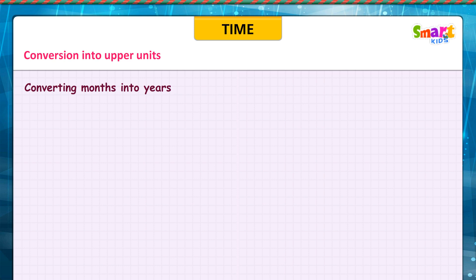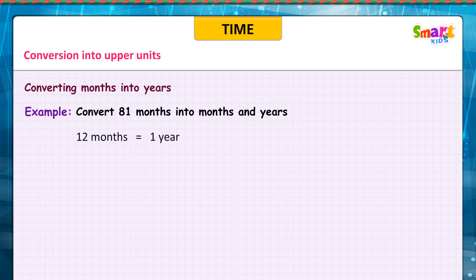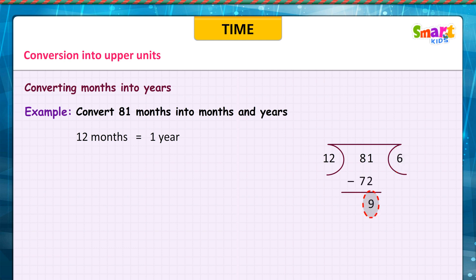Converting months into years. Example: convert 81 months into years and months. We know that 12 months is equal to 1 year. 81 divided by 12 goes 6 times with a remainder of 9. Therefore, 81 months is equal to 6 years and 9 months.